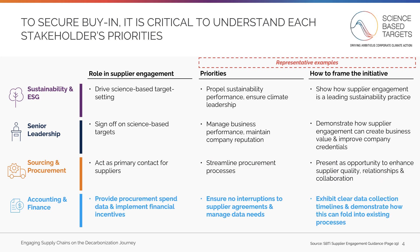Finally, you have your accounting and finance teams, who provide procurement spend data and implement financial incentives. These teams often focus on ensuring continuity in your existing supplier agreements and can help you understand the data needed to run your supplier engagement program. To get this team's buy-in, you should exhibit clear data collection timelines for supplier data and demonstrate how this can fold into existing processes, so as not to disrupt existing supplier business agreements.